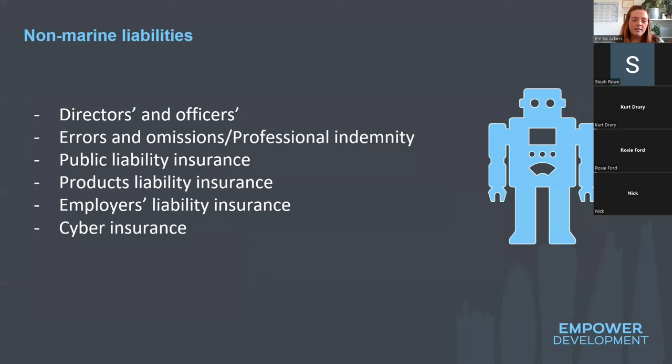For non-marine liabilities, you'll see directors and officers, errors and omissions, and professional indemnity — those two are interchangeable and effectively the same thing. We also have public liability, products liability, employers liability insurance, and cyber insurance. Just familiarize yourself with those types of cover.